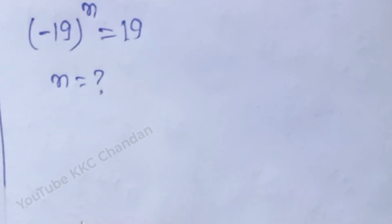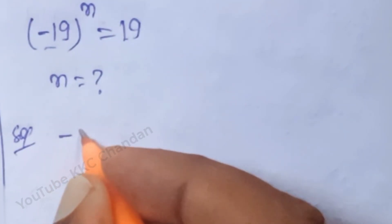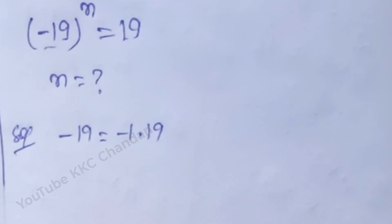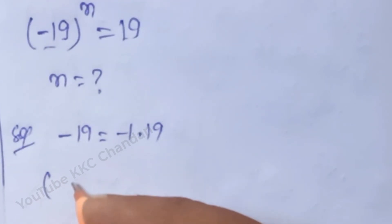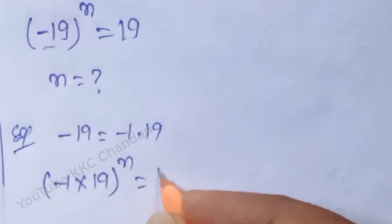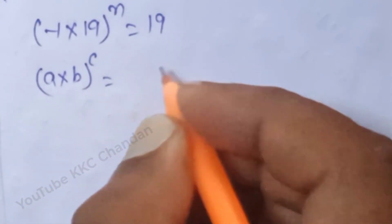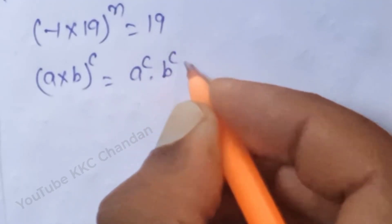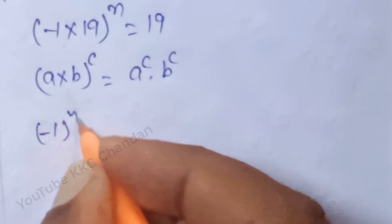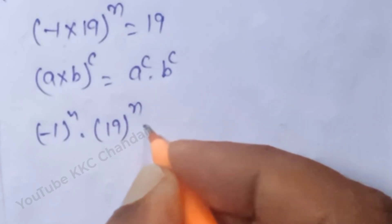How to solve this problem? See here. First of all, -19 will be written as -1 times 19. So here, (-1 × 19)^n is equal to 19. We apply the rule (a × b)^c = a^c × b^c, so this gives us (-1)^n × 19^n is equal to 19.